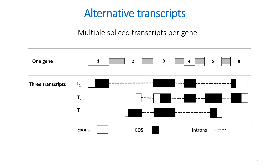It is now well known that alternative splicing is a universal process in eukaryotic organisms, and that it allows multiple distinct splice transcripts to be produced from the same gene. On this image, three transcripts have been produced from the same gene. The first transcript is composed of exons 1, 3, 4, and 6, for example. Introns are represented with dashed lines.